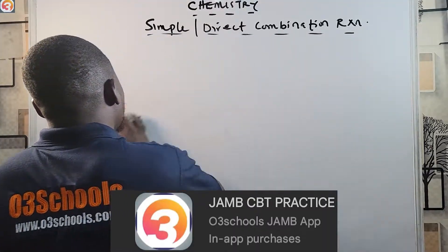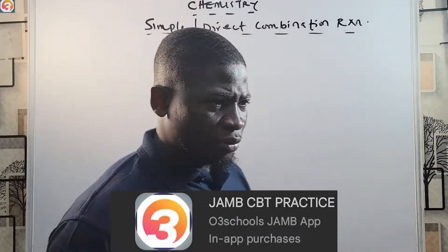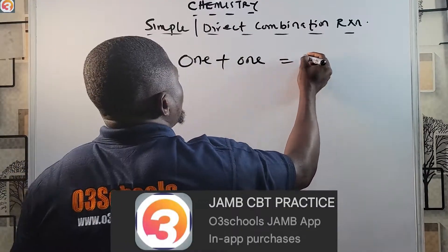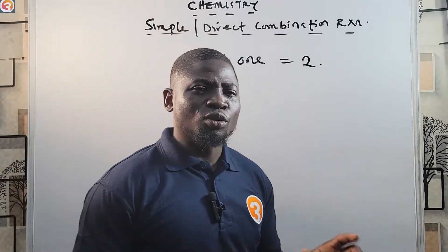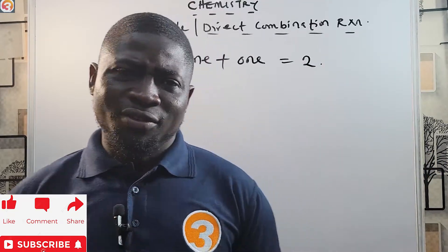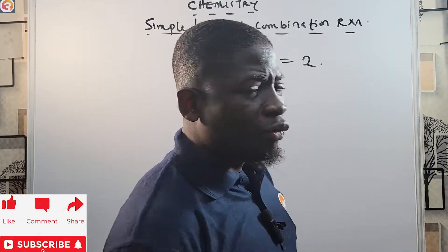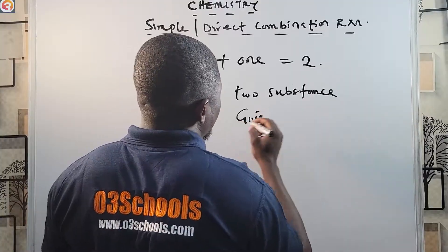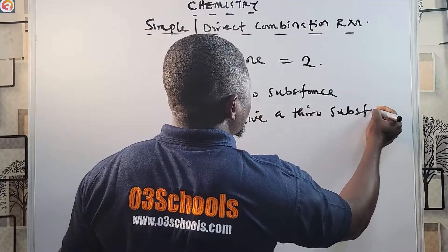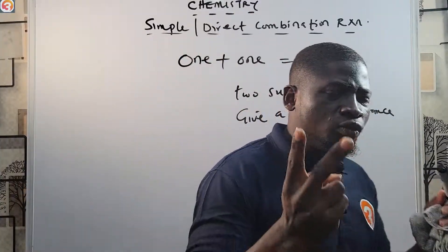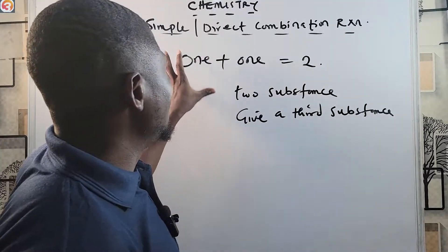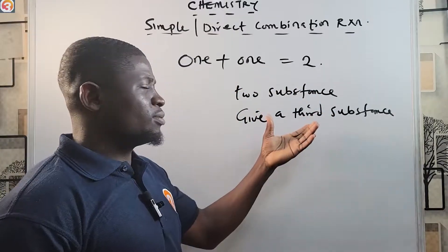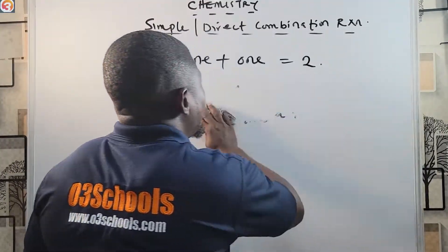Now let's get back to why we are here today — the simple combination reaction. A simple combination reaction is best described as a 'one plus one equals two' type of reaction. It involves the direct combination of two substances to form a third substance. That is what a simple or direct combination reaction is.